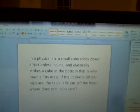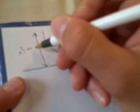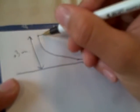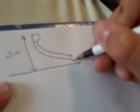Okay, so first step here will be to draw out the situation that we have. Here's the incline. And this is all 0.3 meters. And then here's our big cube. It moves down the incline.